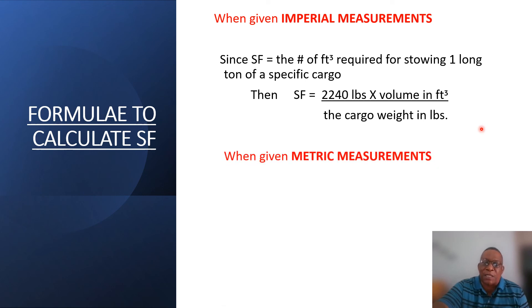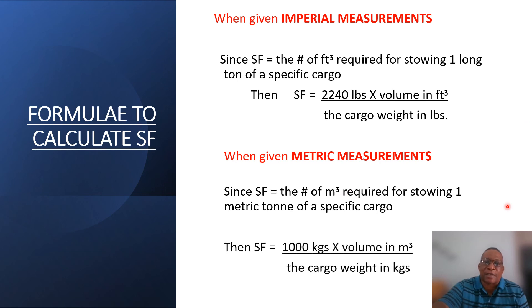When you are given metric measurements, and these would include cubic meters and kilograms, and you want to find a storage factor, a metric storage factor, then you will use this formula: SF = 1,000 kg × volume in m³ ÷ cargo weight in kg. Repeating: storage factor in metric would be 1,000 kg × volume in m³, and you will divide that by the cargo weight in kilograms.